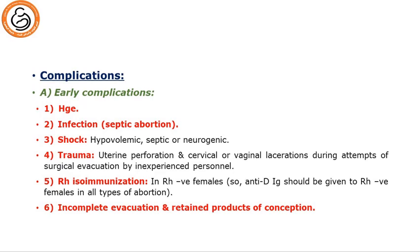For complications, we have early complications including hemorrhage; infection, which is called septic abortion; shock whether hypovolemic, septic, or neurogenic; trauma such as uterine perforation, cervical or vaginal laceration during attempts of surgical evacuation by inexperienced personnel; and Rh isoimmunization in Rh-negative females. So we should give anti-D immunoglobulins for Rh-negative females in all types of abortion to guard against Rh isoimmunization.